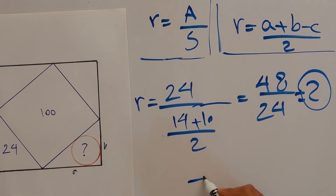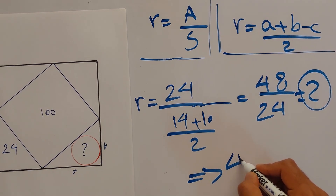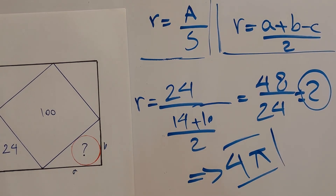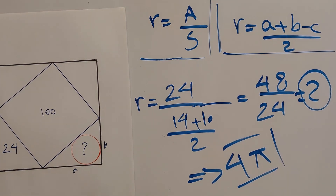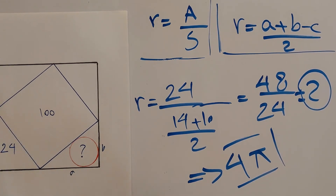So the final answer is that the area of the inscribed circle is 4π. There are certainly other geometric approaches to this problem — please share your methods in the comments. Make sure to like and subscribe if you haven't already. As always, I love and appreciate you guys. PrimeLogic signing out.